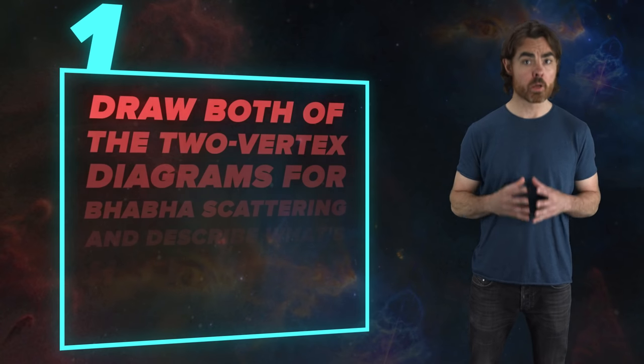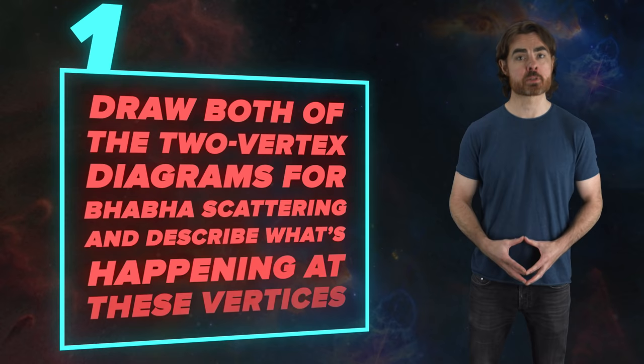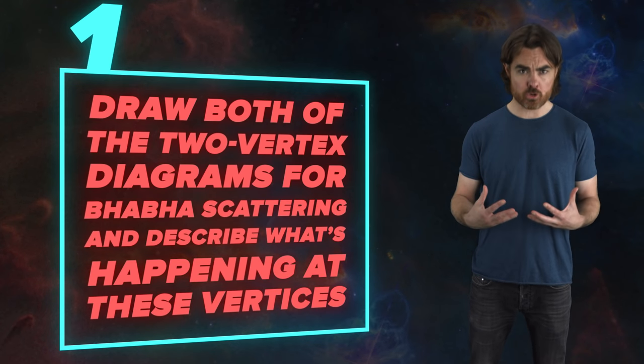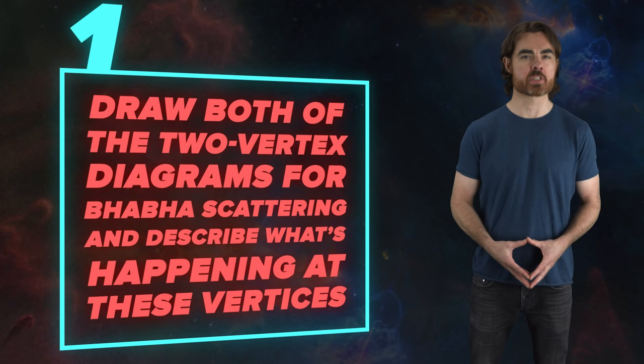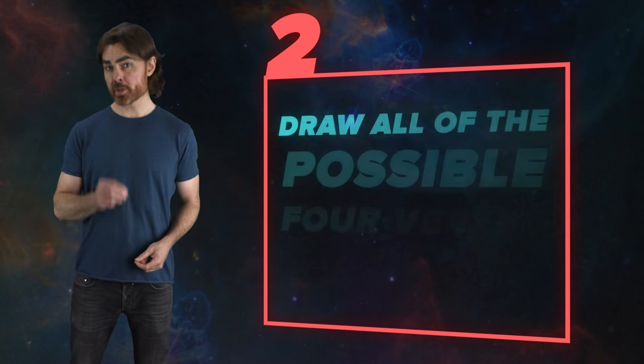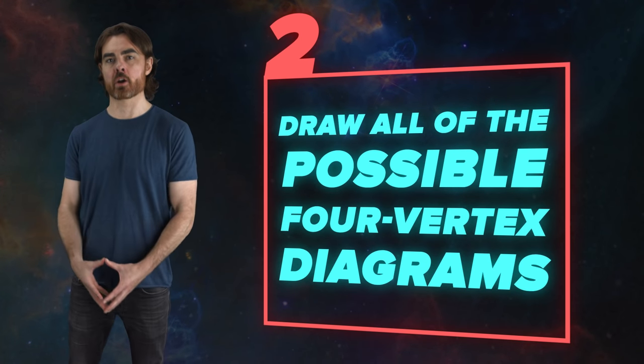Those diagrams seem to describe very different events, but they lead to exactly the same result. Use the rules I described in this episode to draw both of the two vertex diagrams for Barber scattering and describe what's happening at each of these vertices. Then, I want you to try to draw all of the possible four vertex diagrams.